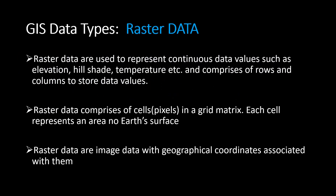Now we're going to be talking about GIS data types. The two types of data we're going to be using are the raster data type and the vector data type. Raster data types are used to represent continuous data values such as elevation, hillshade, temperature, and so on.